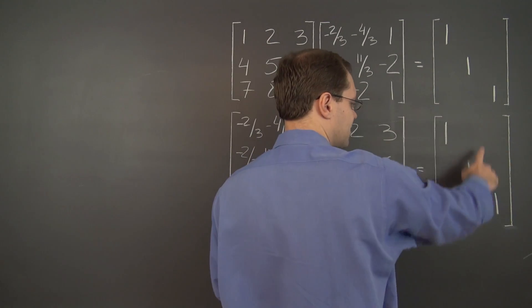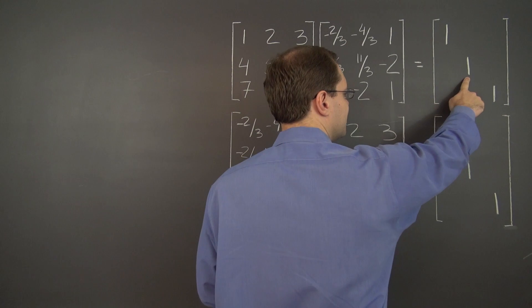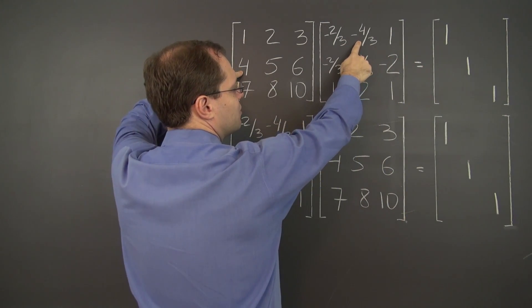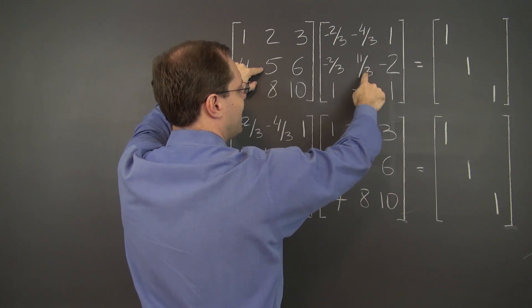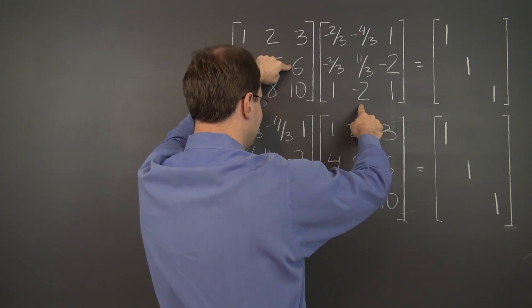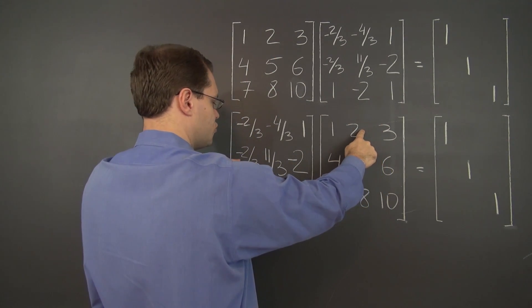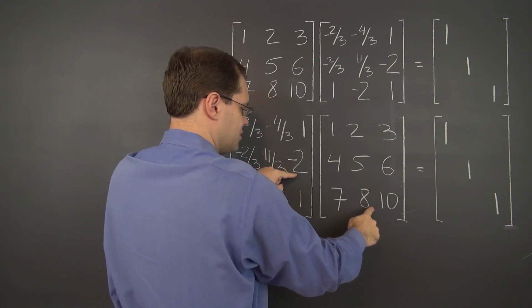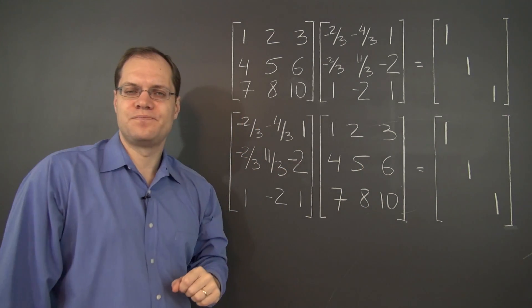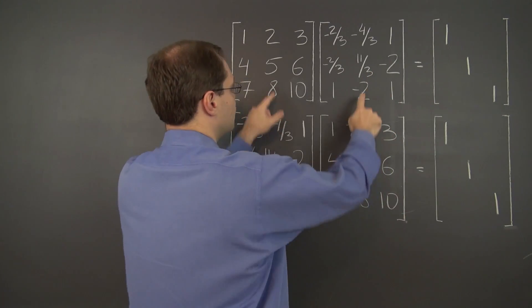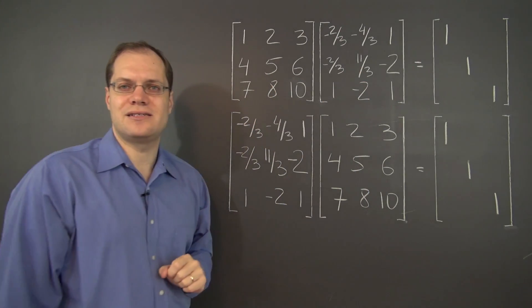Just take a look at this one and compare it to this one. So to get this one, 4 comes together with negative 4 thirds, 5 and 11 thirds, and then 6 and negative 2. And in the next case, it's 2 and negative 2 thirds, 5 and 11 thirds, and 8 and negative 2. Completely different combinations of numbers, except for the 5 and 11 thirds, which we found in both cases.